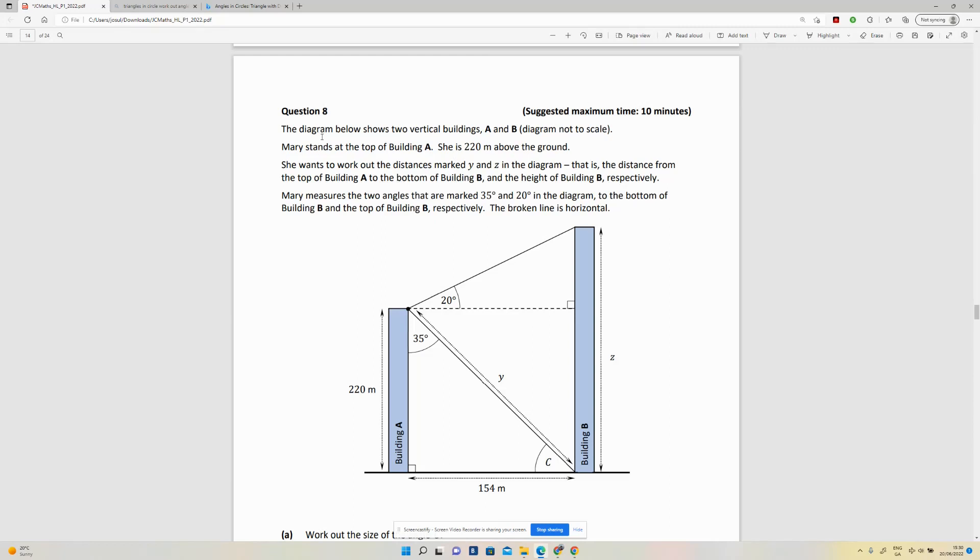Okay, question eight. The diagram below shows two vertical buildings. You've got the two purple pieces here, they're the buildings. This guy and this guy, A and B, diagram not to scale. Mary stands at the top of building A.